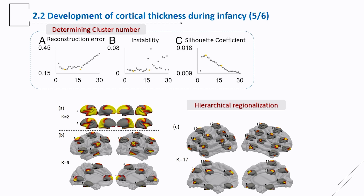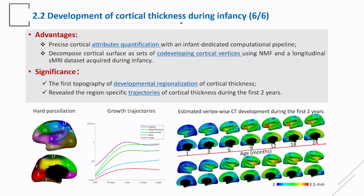This is a clustering-based method requiring determination of a clustering number. Our criterion indicated that 2, 6, and 17 are good numbers; we used 17 to analyze growth patterns. We found 17 regions where each group of vertices grows differently — for example, purple represents auditory and red represents visual, developing in distinct patterns. Overall, cortical thickness peaks at about 14 months during infancy, though some regions show a peak and some do not. More detailed patterns are described in our paper.